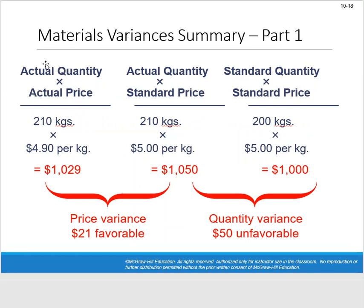Setting up the three-prong approach: actual actual on the left, actual standard in the middle, standard standard on the right. Actual actual = $1,029. Middle: 210 kg × $5 = $1,050. Far right (standard standard): 2,000 parkas × 0.1 kg × $5 = $1,000. Overall spending variance: $29 unfavorable. Breaking it down: quantity variance = $1,050 − $1,000 = $50 unfavorable (10 extra kg × $5). Price variance = $1,029 − $1,050 = $21 favorable (210 kg × $0.10 savings per kg, since actual price was $4.90).